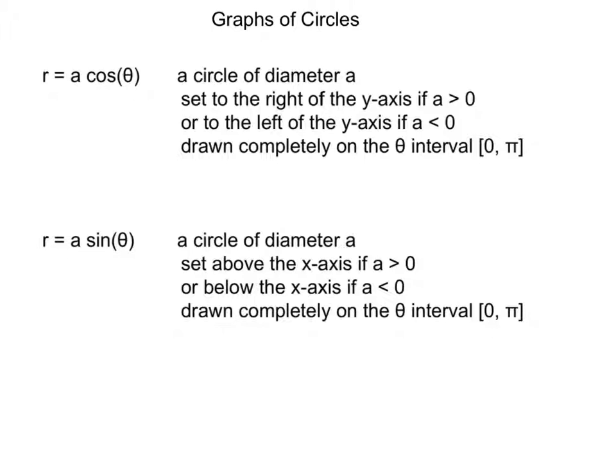The first category of graph that I expect you to have memorized are the graphs of circles. If you have r equals a constant times cosine theta, that will be a circle of diameter a.